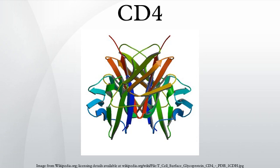CD4+ T helper cells are white blood cells that are an essential part of the human immune system. They are often referred to as CD4 cells, T helper cells, or T4 cells. They are called helper cells because one of their main roles is to send signals to other types of immune cells, including CD8 killer cells, which then destroy the infectious particle. If CD4 cells become depleted — for example in untreated HIV infection or following immune suppression prior to a transplant — the body is left vulnerable to a wide range of infections that it would otherwise have been able to fight.